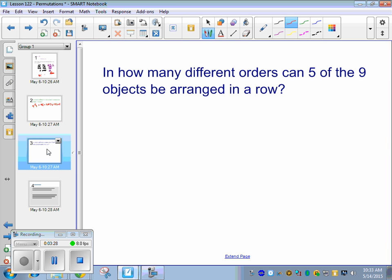All right. Now, we have a different type of question. So, we just did nine choose nine, and the first slide would have been three choose three. We did all three of them. Okay. This one says, in how many different orders can five of the nine objects be arranged in a row? So, in the last problem, we chose all nine of them, right? In this problem, I'm only picking five out of my nine options.